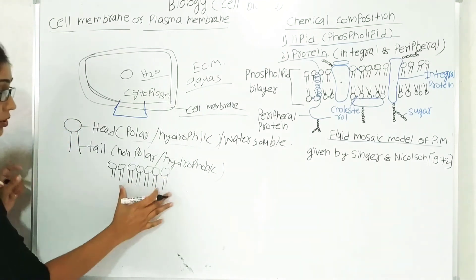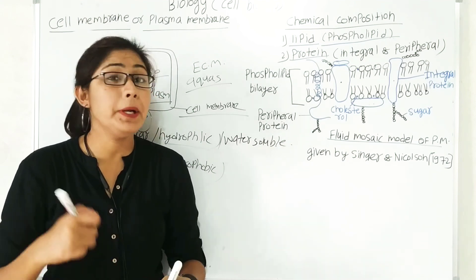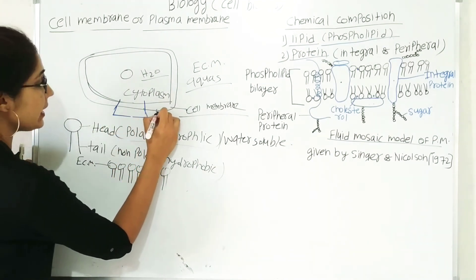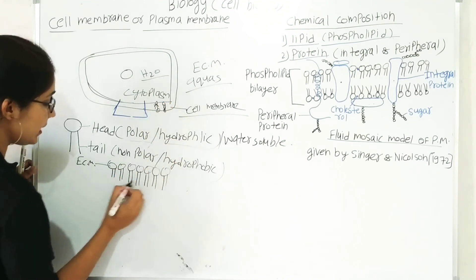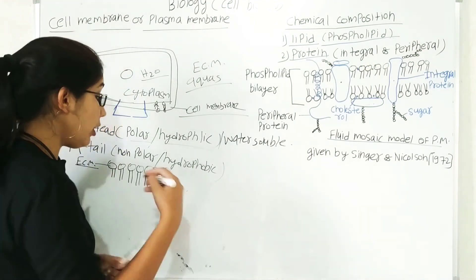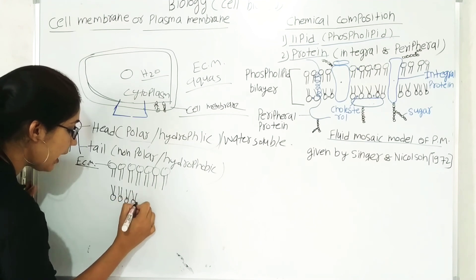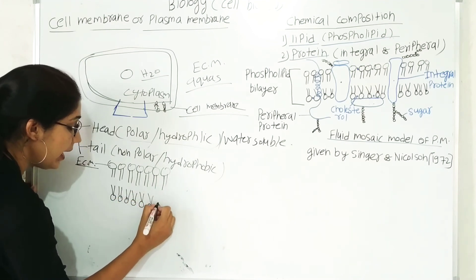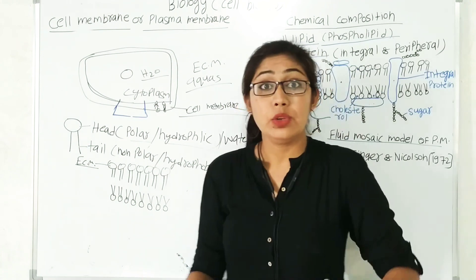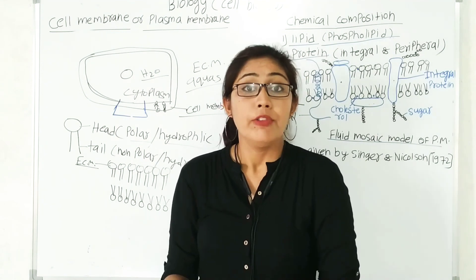This is a single layer of phospholipid molecules. But we know the plasma membrane is made up of a lipid bilayer. In this single layer, the head group is oriented toward the extracellular matrix, and the tail is arranged toward the cytoplasmic portion. In the second layer, phospholipid molecules arrange so that the head group orients toward the cytoplasmic portion and the tails are arranged toward each other — forming a lipid bilayer.